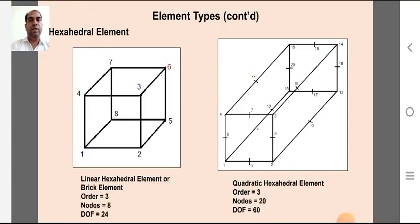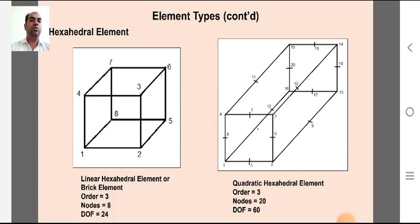The hexahedral element, also known as the linear hexahedral or brick element, is of order three with eight nodes, each associated with three degrees of freedom, giving twenty-four total degrees of freedom. The higher-order hexahedral element has twenty nodes, is of order three, and each node is associated with three degrees of freedom, giving sixty total degrees of freedom.